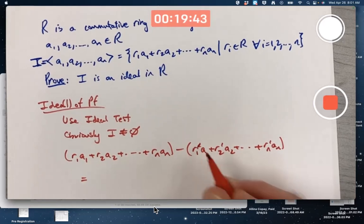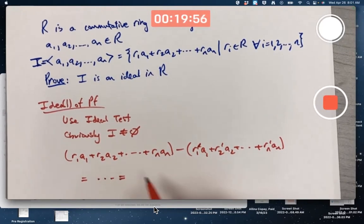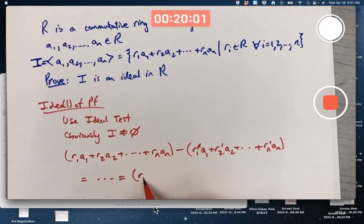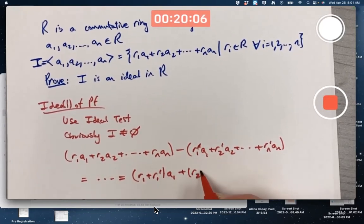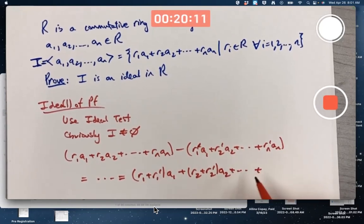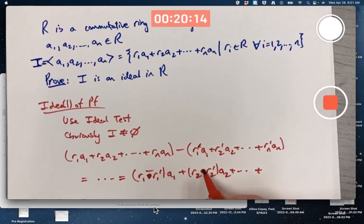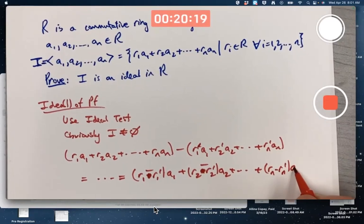And addition, meaning subtraction, subtraction as adding additive inverses is commutative. You can rearrange things, use the distributive property. Ultimately, you can factor out the A's out of each term. You'll get R1 plus R1 prime times A1 plus R2 plus R2 prime times A2, etc. Oops, with minus sign, sorry.